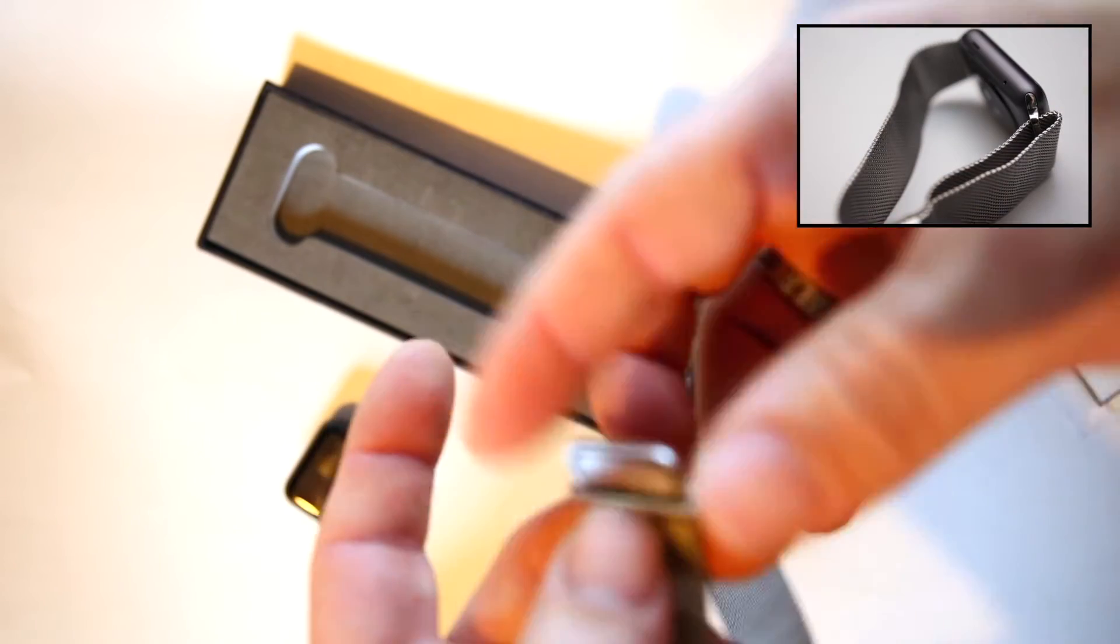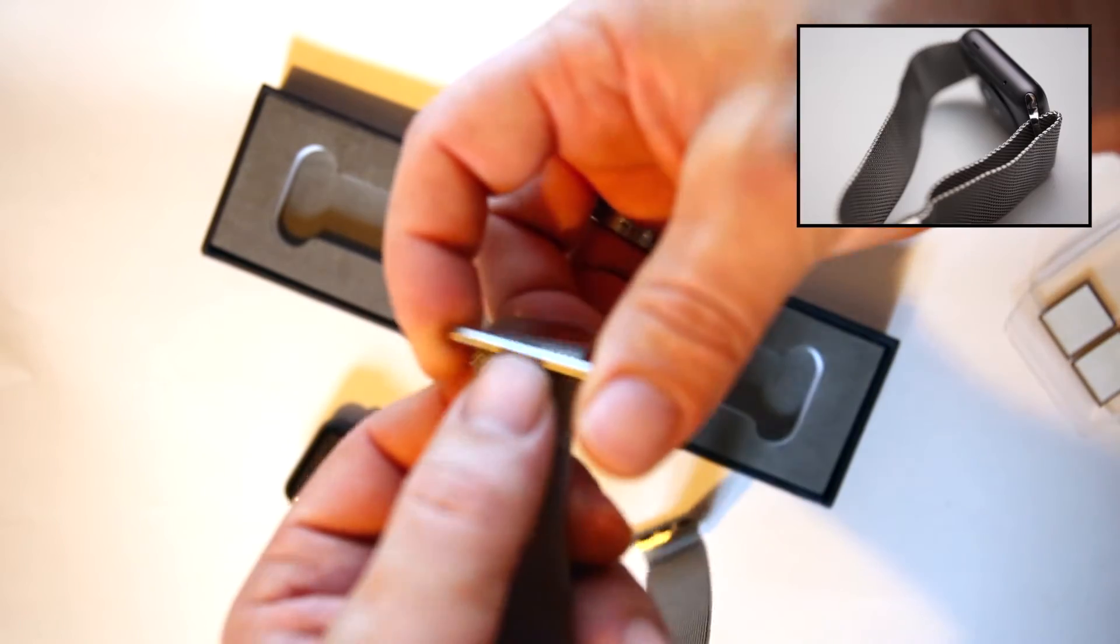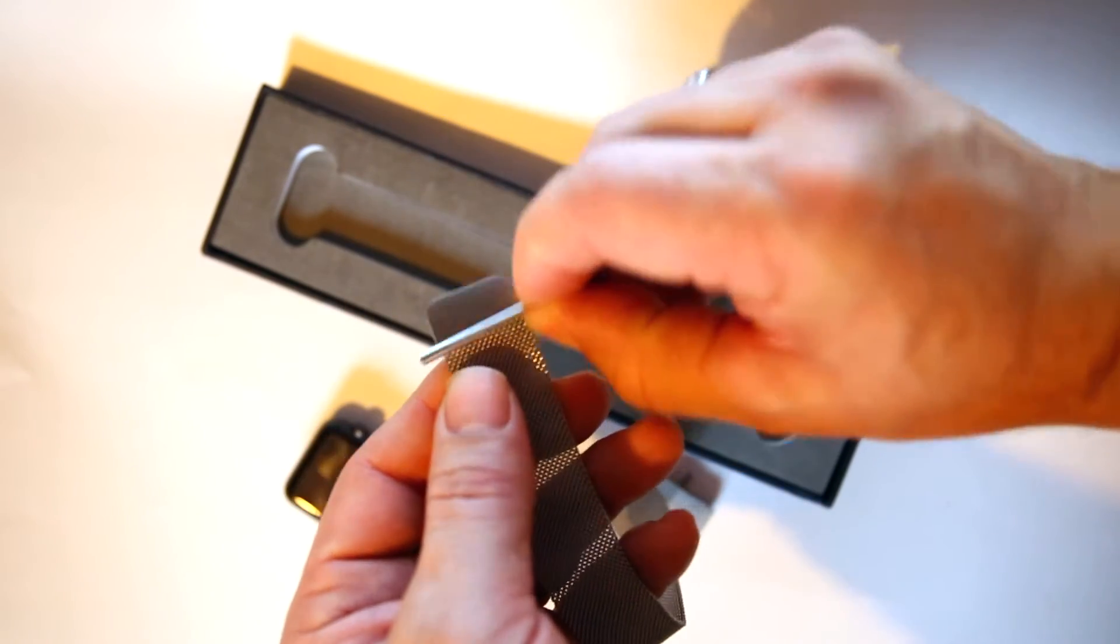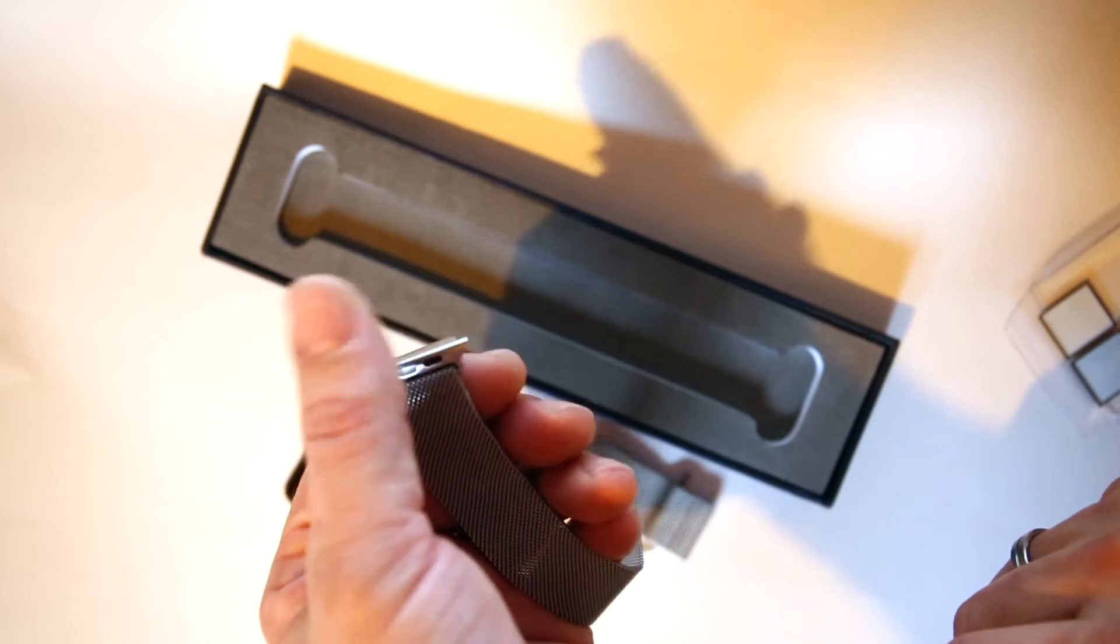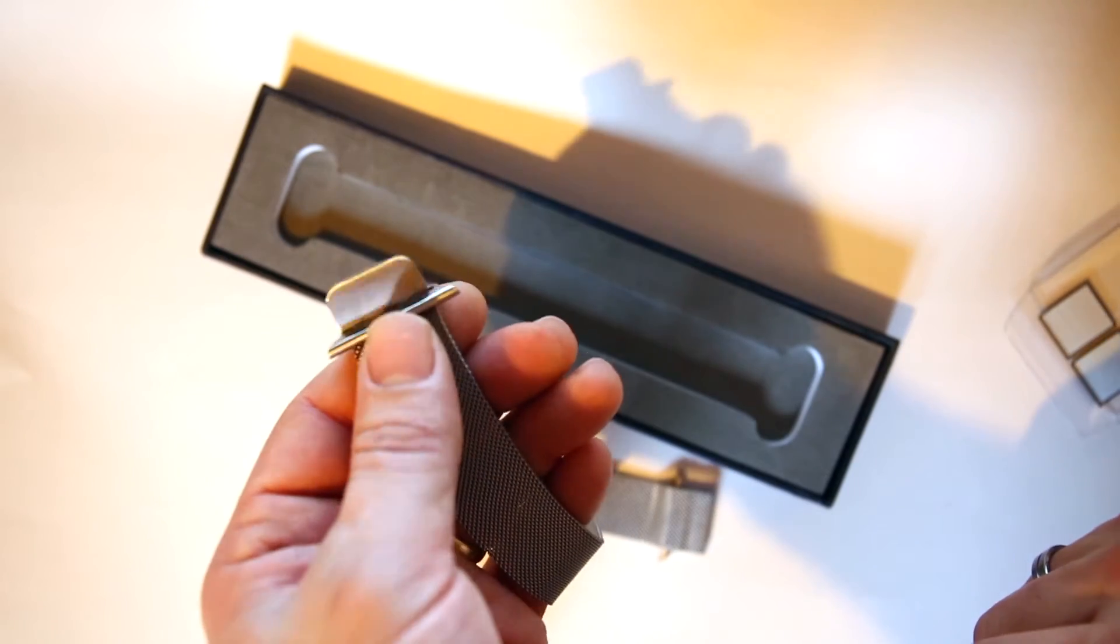And as with the original one, the Milanese Loop doesn't come free from this loop, so that if it does slip on your wrist, you're not going to lose your watch.